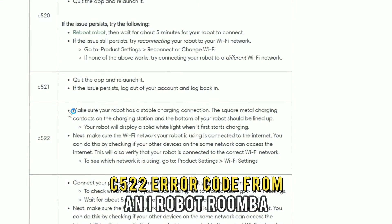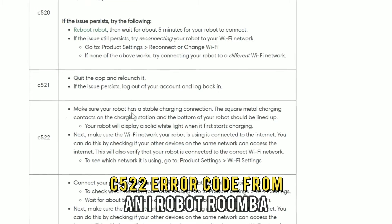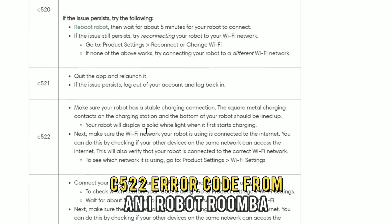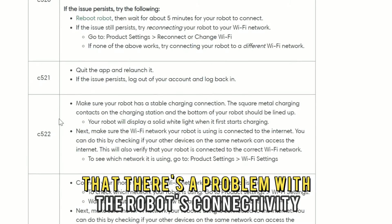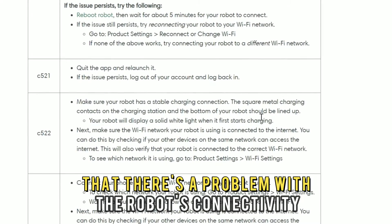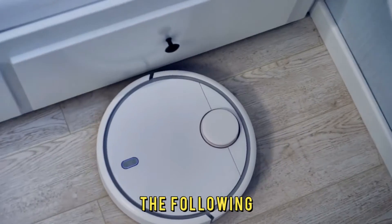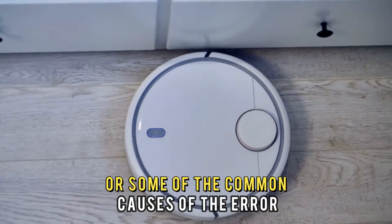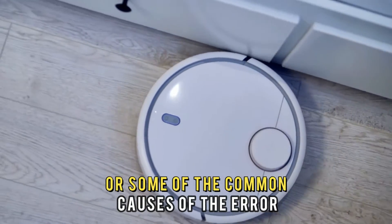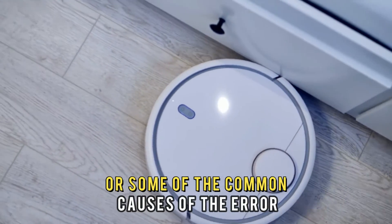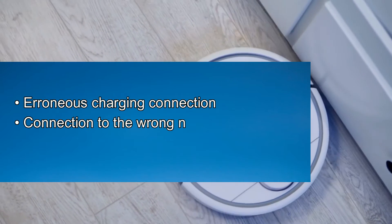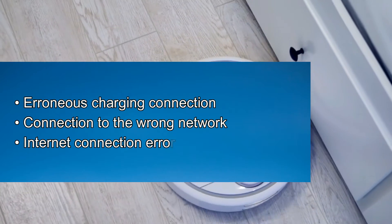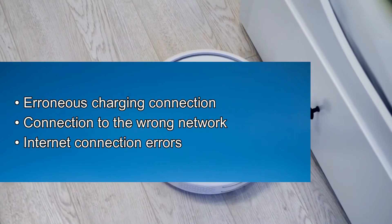A C522 error code from an iRobot Roomba is a sign that there's a problem with the robot's connectivity. The following are some of the common causes of the error: erroneous charging connection, connection to the wrong network, or internet connection errors.